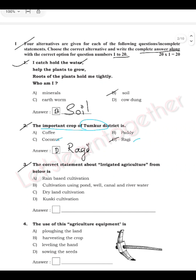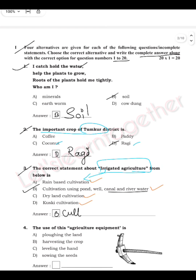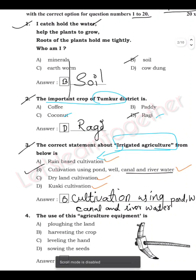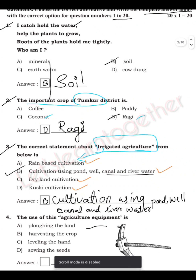Question 3: What is the correct statement about irrigated agriculture? The options are: rain-based cultivation; cultivation using pond, well, canal, and river water; dry land cultivation; or kuski cultivation. Irrigated agriculture means cultivation using pond, well, canal, and river water, so option B is correct. Write the full sentence: 'Cultivation using pond, well, canal, and river water.'